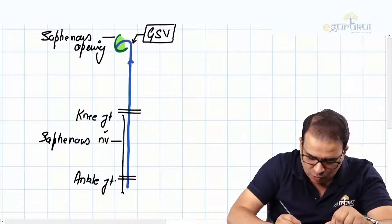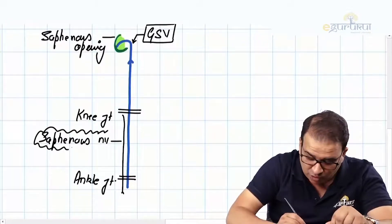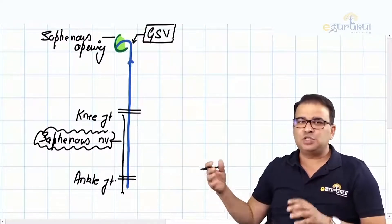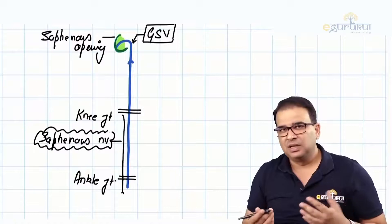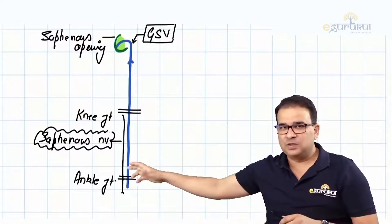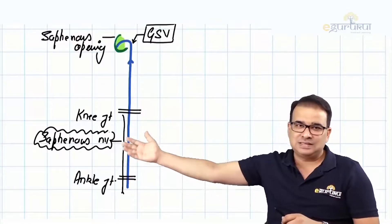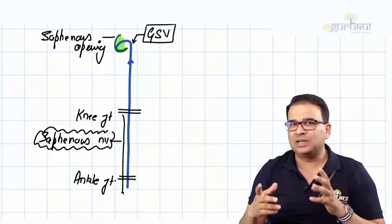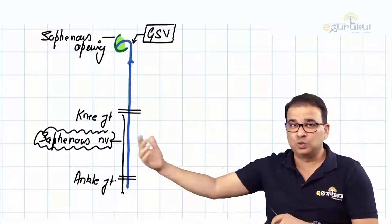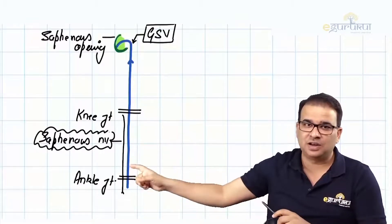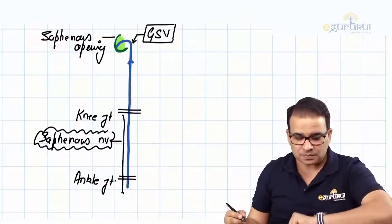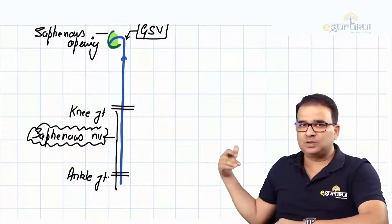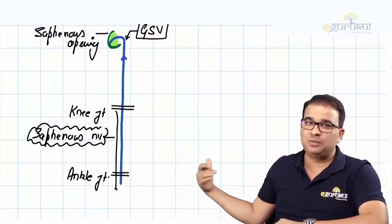I'm marking the saphenous nerve - branch of the femoral nerve - because when you take a graft of the great saphenous vein, they ask: which nerve is most likely to be injured? Obviously the nerve running along with it is the saphenous nerve, which is a branch of the femoral nerve. People usually get confused with the sural nerve - it is not the sural nerve, it is the saphenous nerve running with the great saphenous vein.